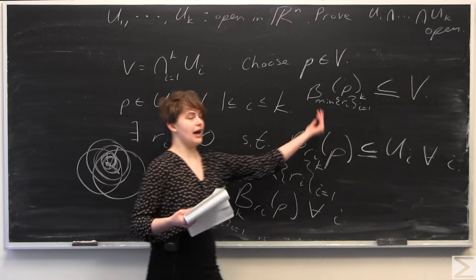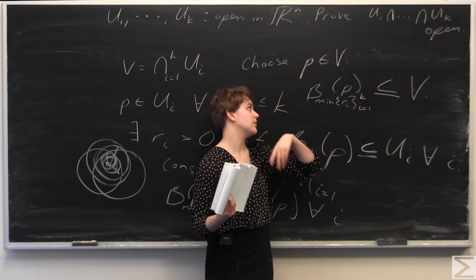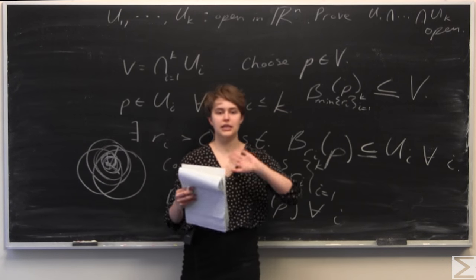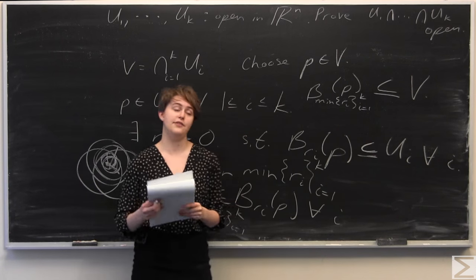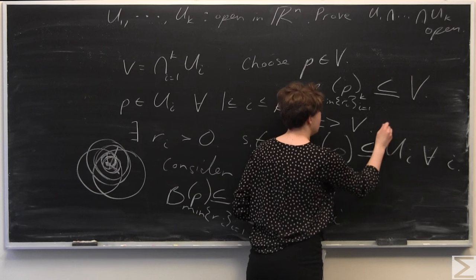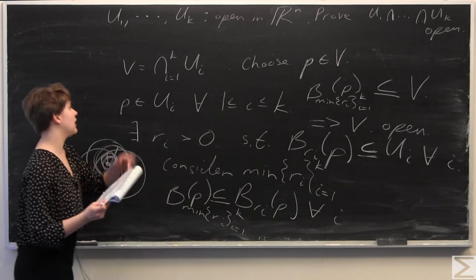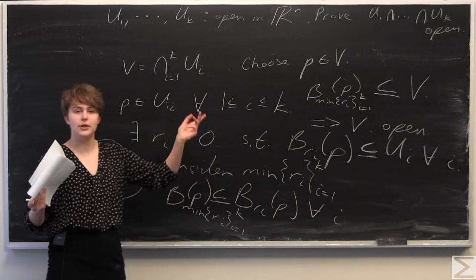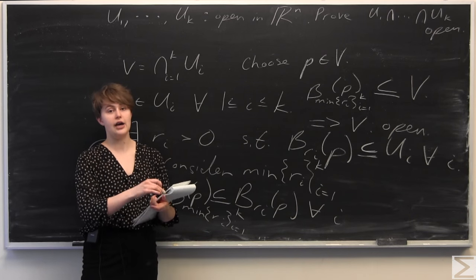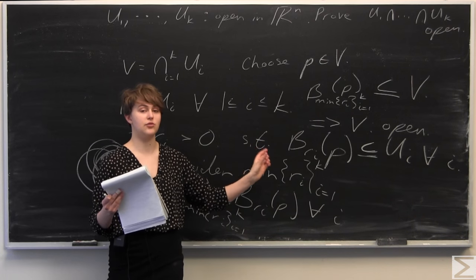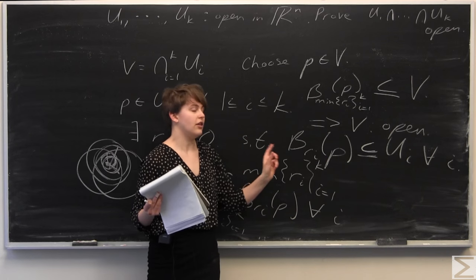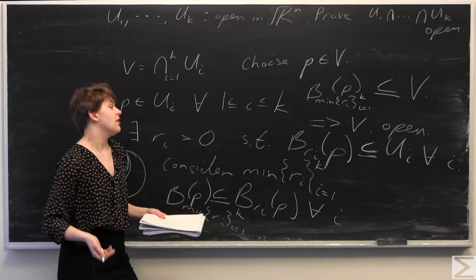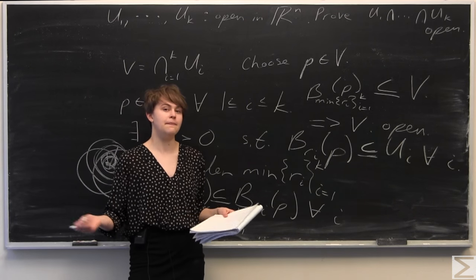By definition, going back from the definition, the fact that we have a ball around any arbitrary point p of some greater-than-zero radius around p that is completely contained within V, implies that V is an open set. Therefore we know that V is open. What we did was: we created V as the intersection of all the finite open sets, chose some point p, constructed balls of radius ri around p, chose the minimum of those radii, and proved that the ball of that minimum radius is contained within all the other balls, which is contained within the intersection of the sets — implying that a finite intersection of open sets ui in Rn is open.